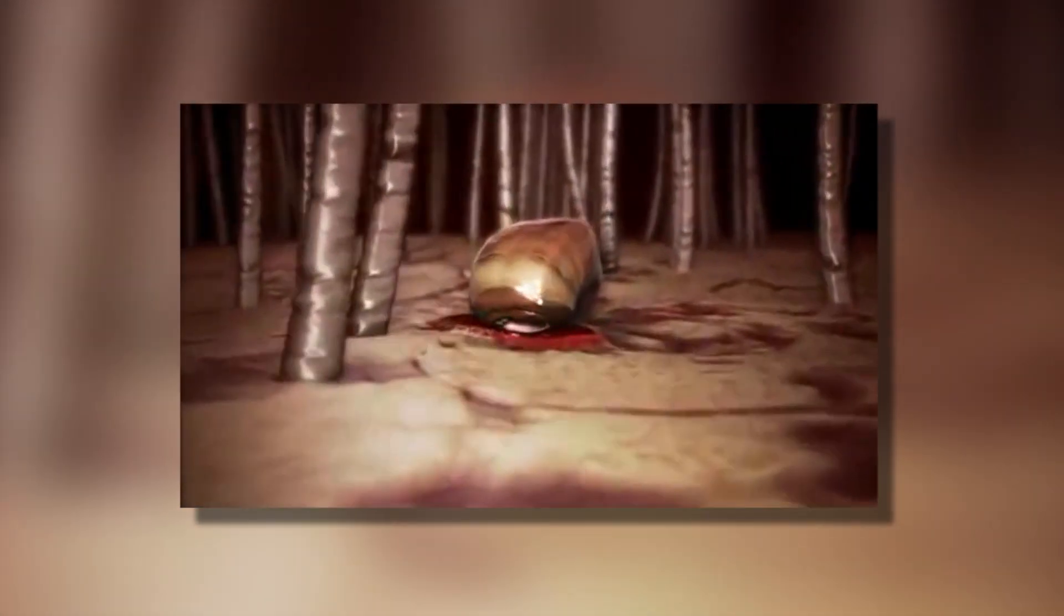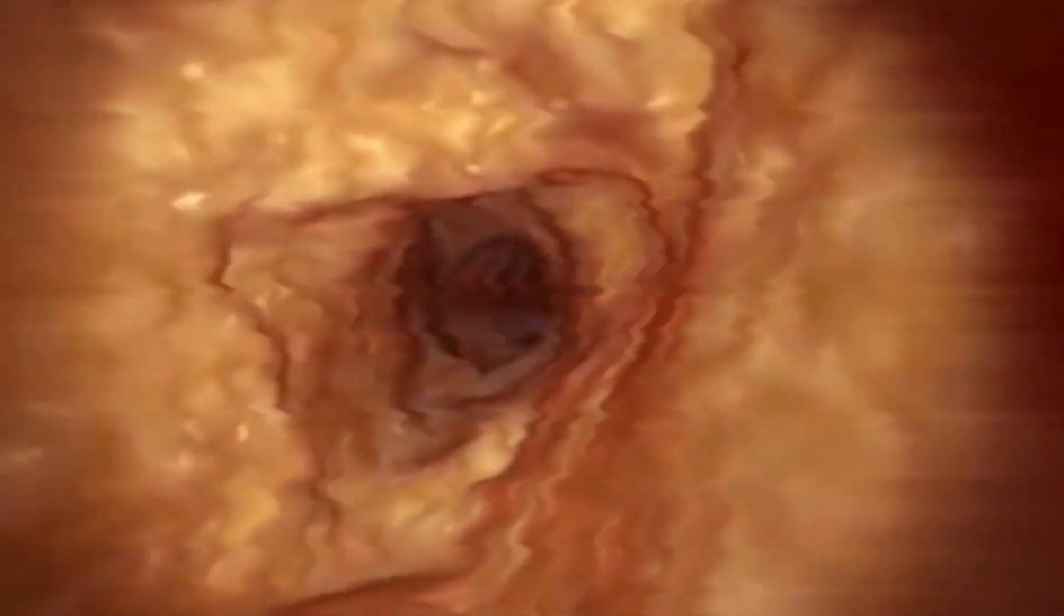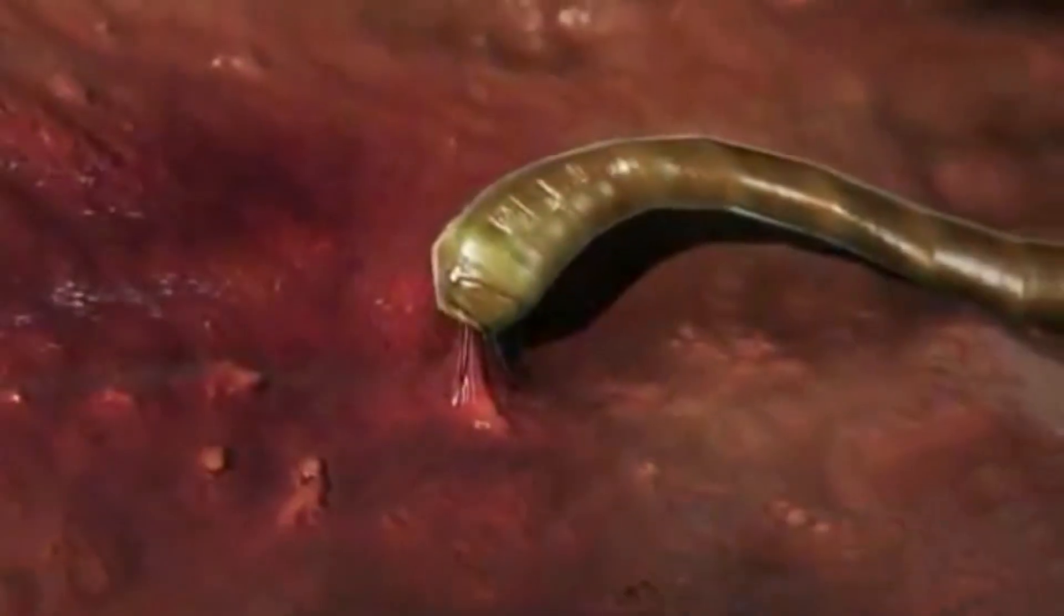The worm can cause diarrhea, pain, and weight loss. If not treated, they can eventually block intestinal ducts, resulting in seizures, muscle, and even eye damage. Tapeworms can also enter other parts of your body, damaging the heart, liver, and brain.